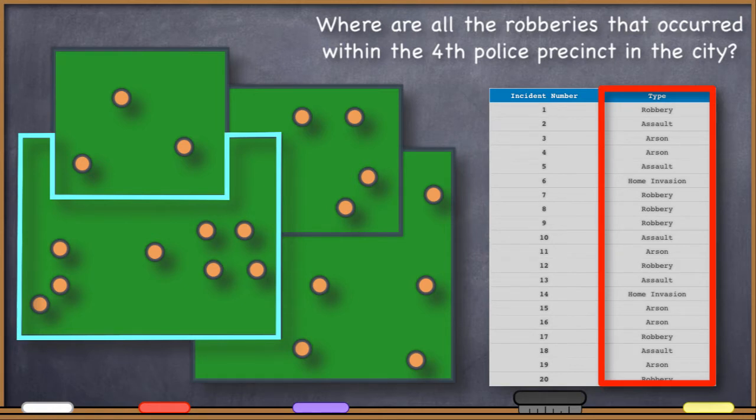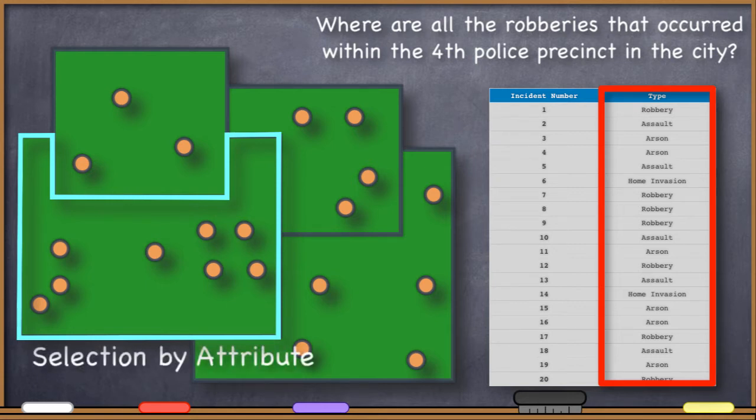Was it a robbery, a battery, an arson, a murder, whatever. So we want to just get to the robberies. So you should be thinking about selection by attribute again. We're going to query the attribute table just to select those that are the robberies. So to do that again, you would construct an SQL query to get at that information.